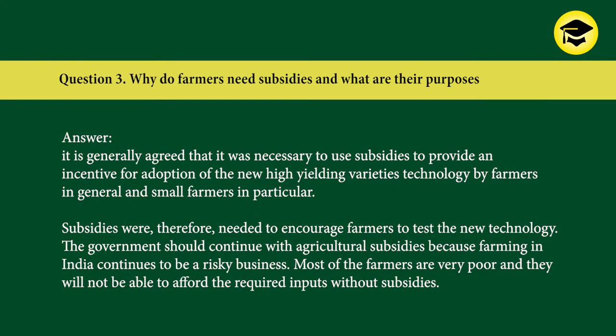Question 3: Why do farmers need subsidies and what are their purposes? Answer: It is generally agreed that it was necessary to use subsidies to provide an incentive for adoption of the new high-yielding varieties technology by farmers in general and small farmers in particular. Subsidies were therefore needed to encourage farmers to test the new technology. The government should continue with agricultural subsidies because farming in India continues to be a risky business. Most farmers are very poor and will not be able to afford the required inputs without subsidies.